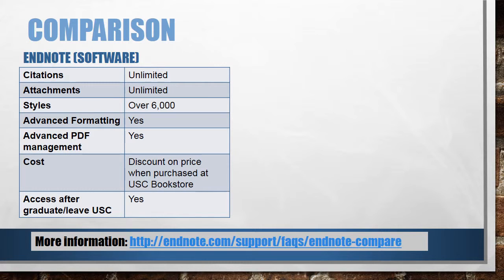You might have heard about EndNote as a software. Instead of using EndNote Online through the library subscription, you can choose to purchase it. The software has slightly different capabilities. You can store an unlimited number of citations, have unlimited space for attachments, and can use over 6,000 citation styles.